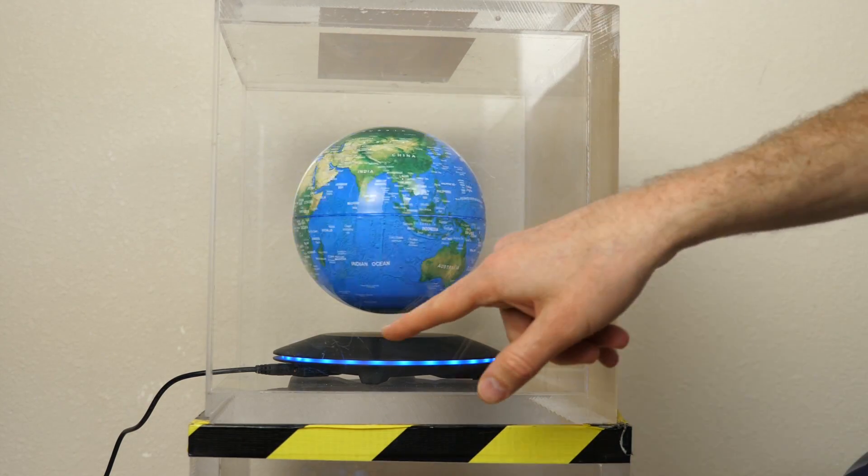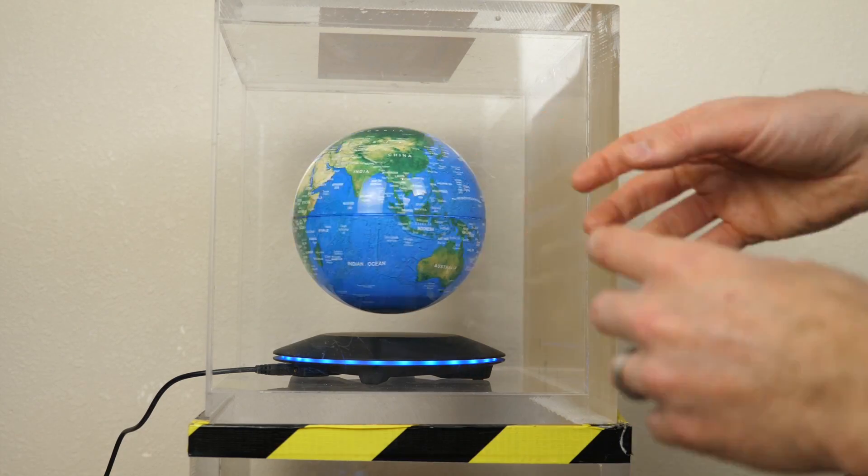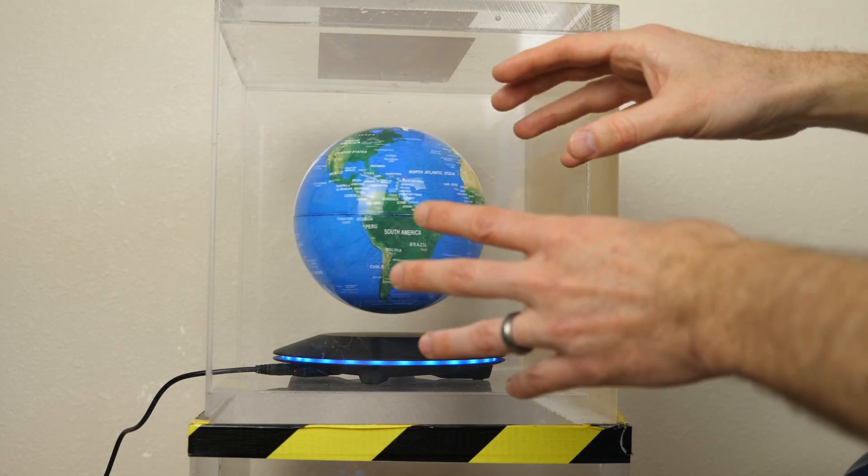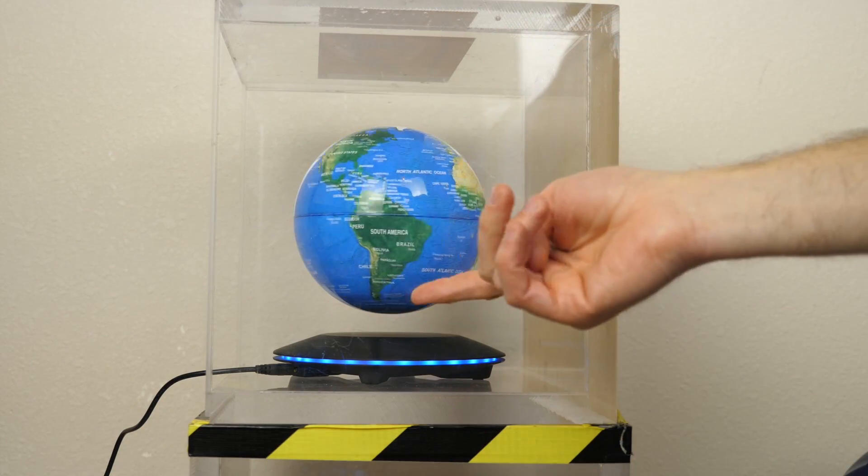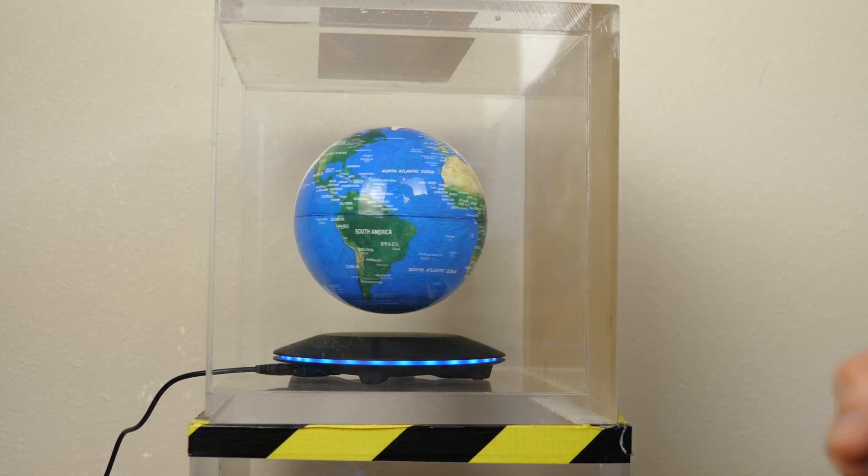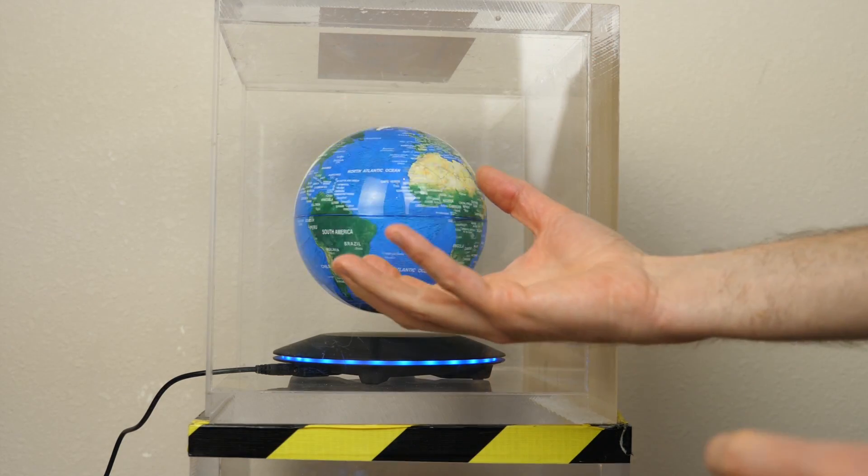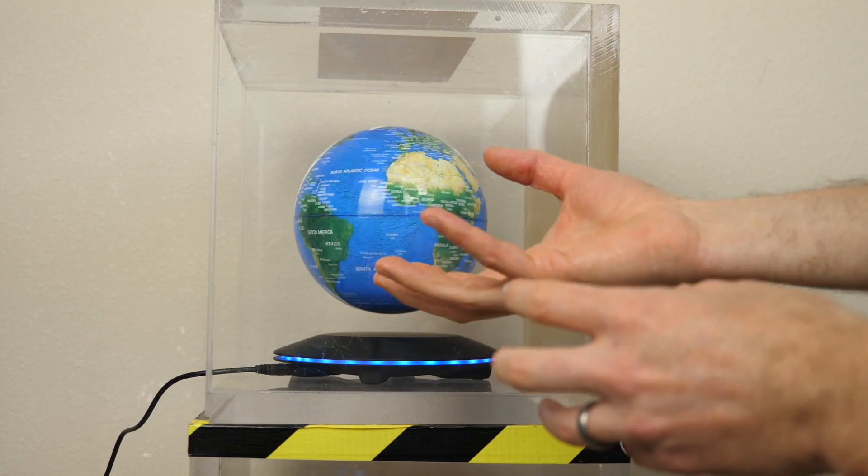So as I said before, the globe works by using electromagnets that are keeping it balanced. So those electromagnets are continually in a feedback loop. And that feedback loop essentially is creating a little bit of magnetic resistance. And so it's stealing some of the angular momentum of the globe as it spins as it tries to keep it balanced.